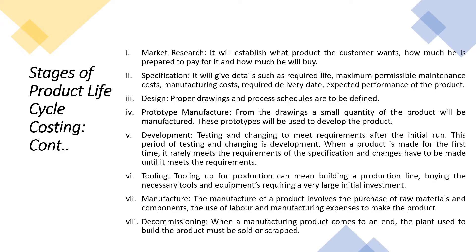Tooling up for production can mean building a production line and buying the necessary tools and equipment, requiring a very large initial investment. Manufacturing a product involves purchase of raw materials and components, use of labor, and manufacturing expenses. Decommission occurs when a product's manufacturing life comes to an end — the plant used to build the product must be sold or scrapped.